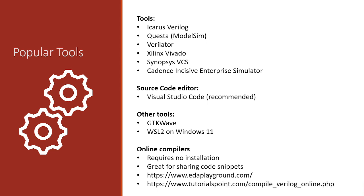Another thing worth mentioning is online compilers. They require zero installation to get started, and I really want to highlight this EDA Playground online compiler. It looks like a really good option — it does allow you to get those VCD dump files, and it also lets you get access to those paid-only industry tools. So it's definitely worth checking out. The only drawback is they do require you to create and verify an account. Another one worth mentioning is Tutorials Point, which does use Icarus version 10, but I was unable to get this online compiler to generate a VCD file. So just be aware that some demos may not work for you if you choose to use this as your tool.